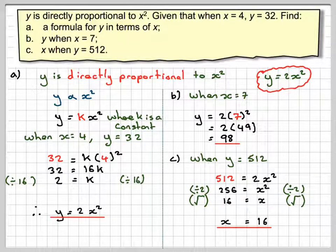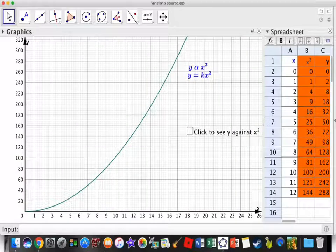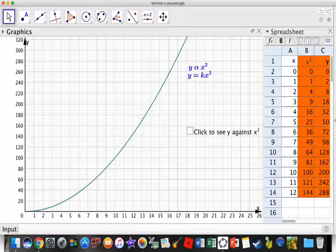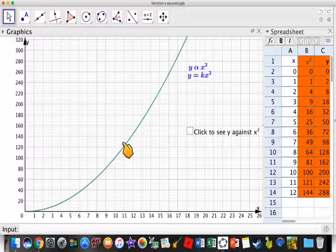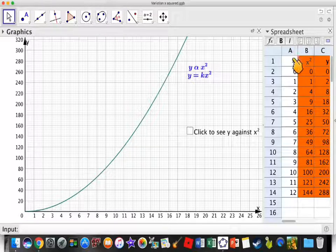Let's have a look at, go back to this GeoGebra applet, and the GeoGebra applet I will put in the notes of this video. So here we have the GeoGebra applet. Here we have our Y is equal to KX squared. Now we get that by plotting X against Y squared.